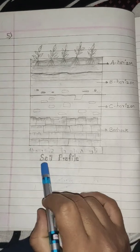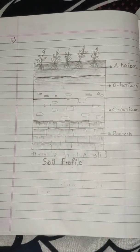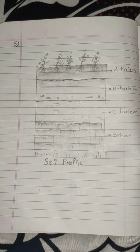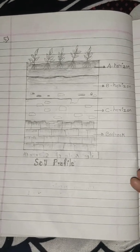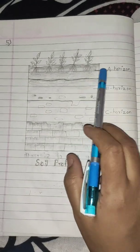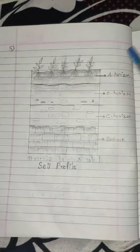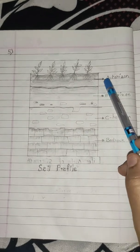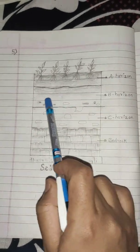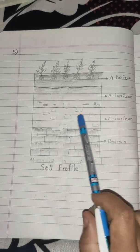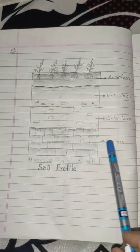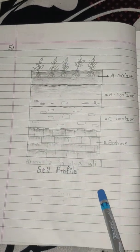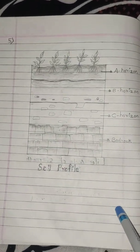The last diagram in this video is the soil profile. If you look beneath the earth you will get these layers. Here you can see the A horizon, where you find plants and humus material. Then there is the B horizon, then the C horizon, and finally the bedrock. So this is the soil profile, and these are all the diagrams in Part 1.